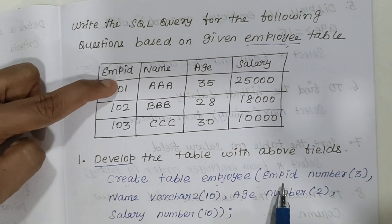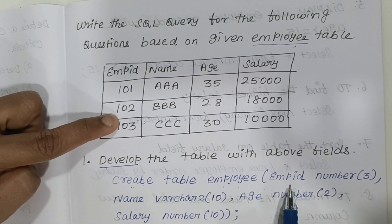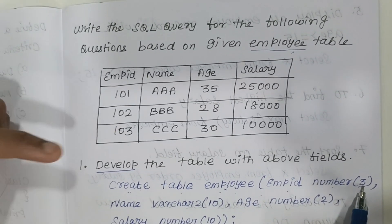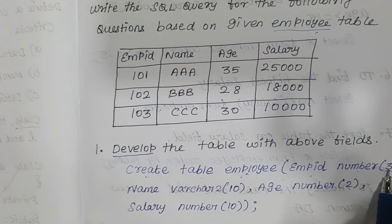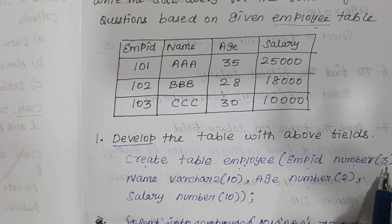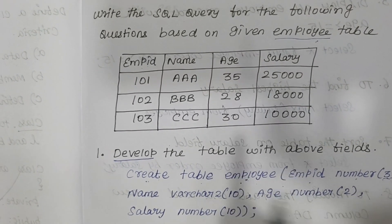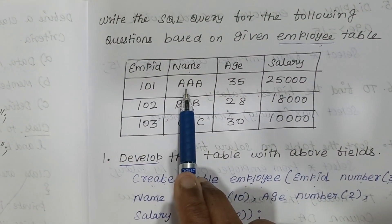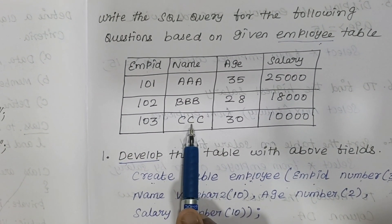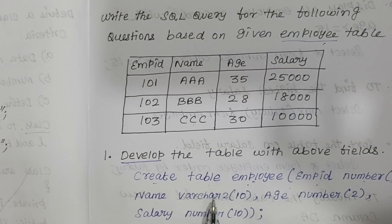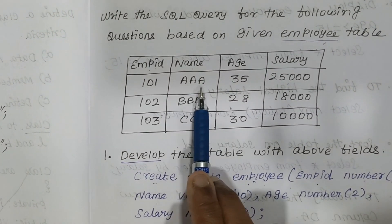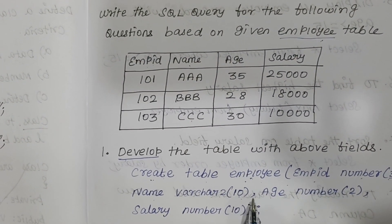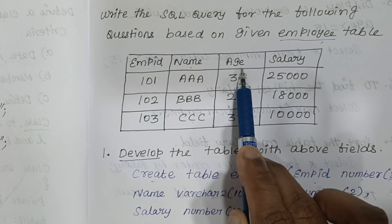emp_id holds only numbers, so you mention NUMBER(3) — you can use 4, 5, or 6, but don't go up to 100 or 200; limit yourself to around 10. Then comma, and the next column is 'name' — since all values are alphabetic, you use VARCHAR2(10). We only have three characters in the data but you can give a maximum of 10, 12, or 25. Then comma, and the next column is 'age'.